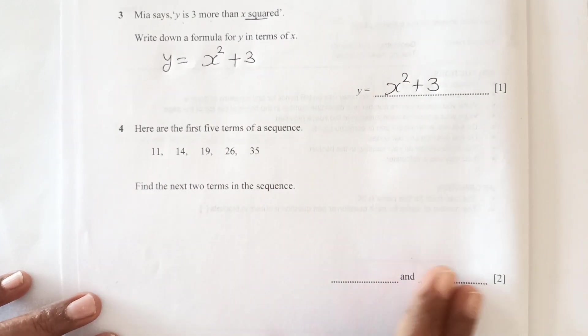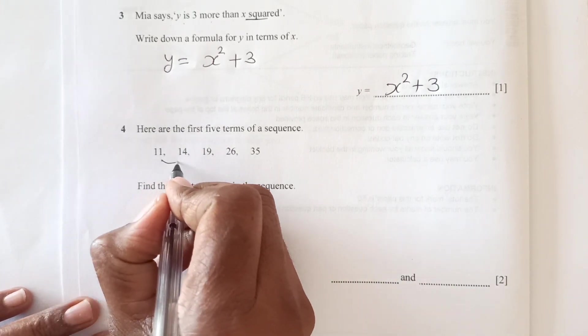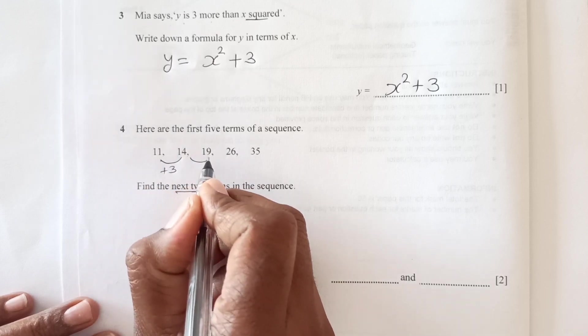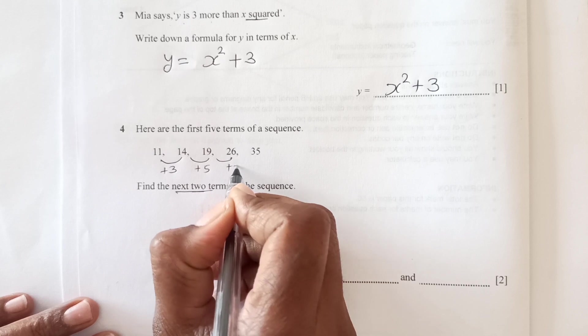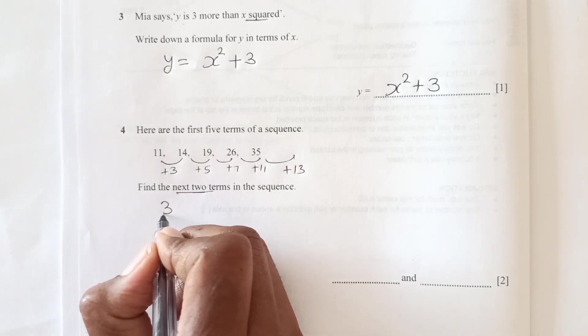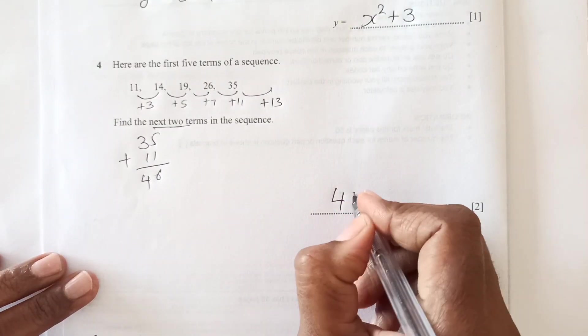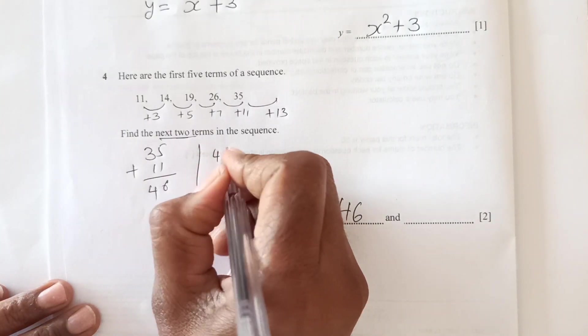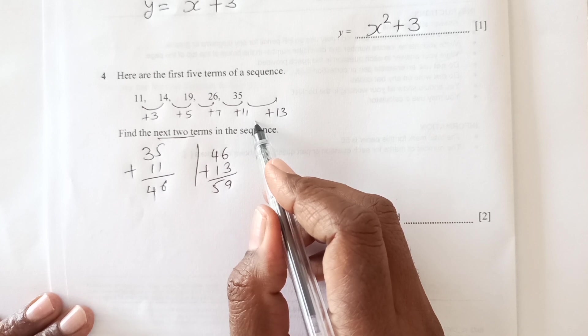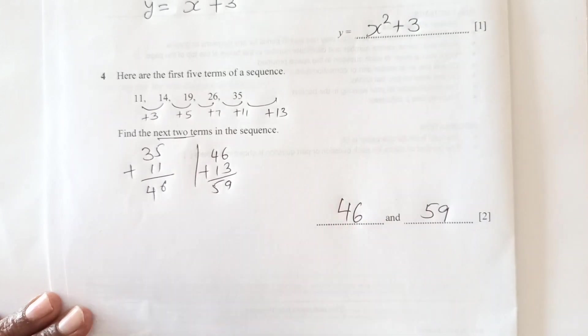Now number 4, here are the list of 5 terms of a sequence. So find the next 2 terms. First we need to look into the pattern. If you get this number 14 minus 11, if you add 3 you will get this. 19 minus 14, this is plus 5. Then this is plus 7 plus 9. So the next number should be plus 11, then next will be plus 13. So 35 plus 11 is 46. So one term of the sequence is 46. Then 46 plus 13, the next one, it's 59.